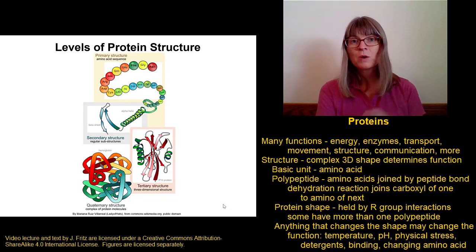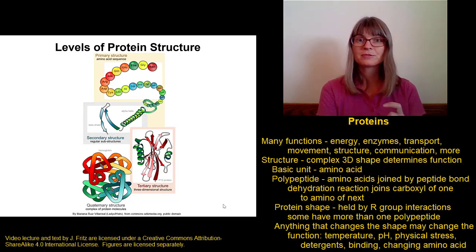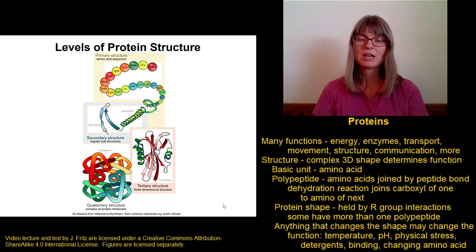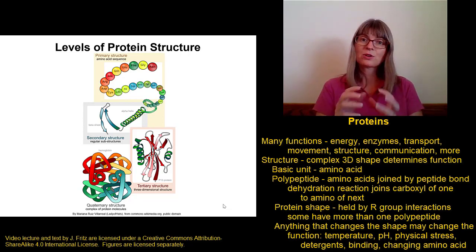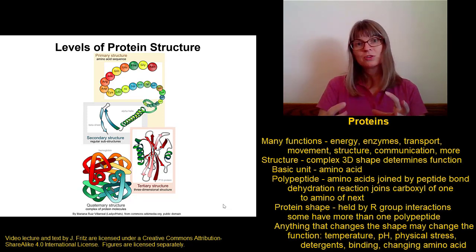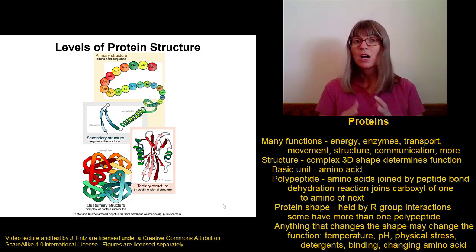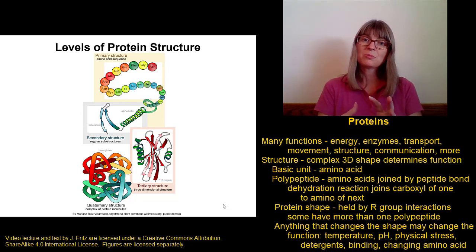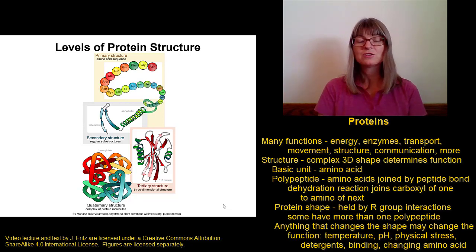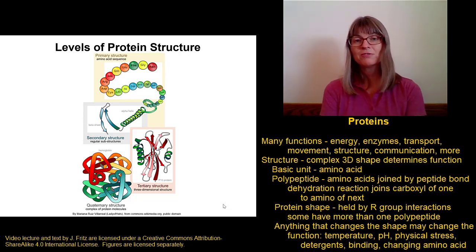Proteins typically only function well within a pretty narrow range of pH. Physical stress or physical tension can also affect protein shape. There are some proteins in the body that detect pressure or tension, and that's because the protein structure changes based on how much pressure or tension it's experiencing. You can also unfold proteins by shaking them, because that can knock some of these interactions apart — just like changing tension or pressure can affect the interactions between the amino acids, changing the shape and function of the protein.